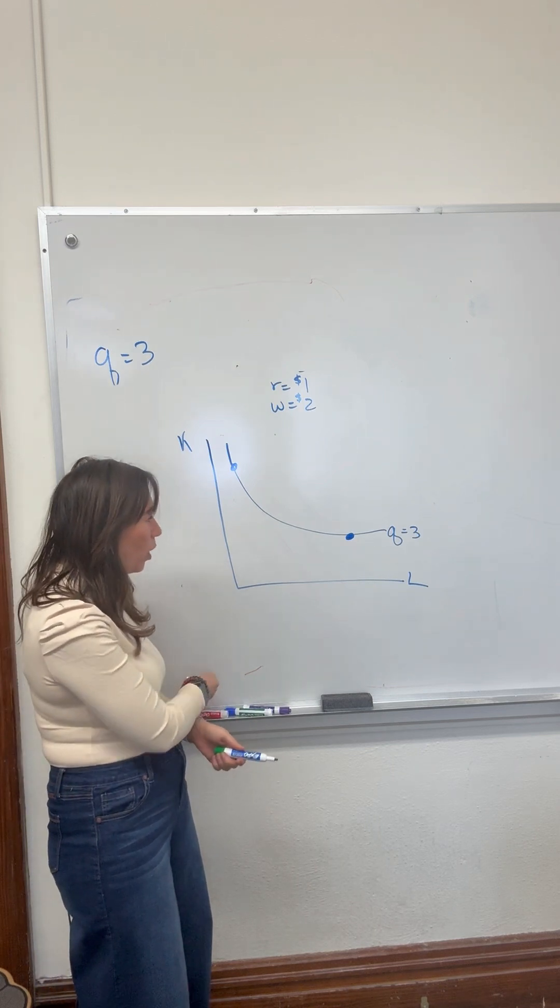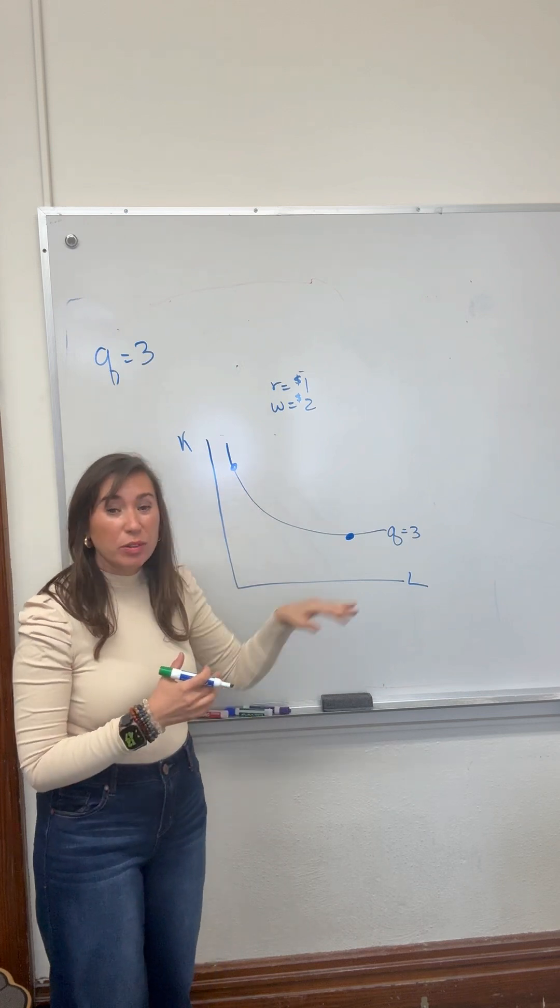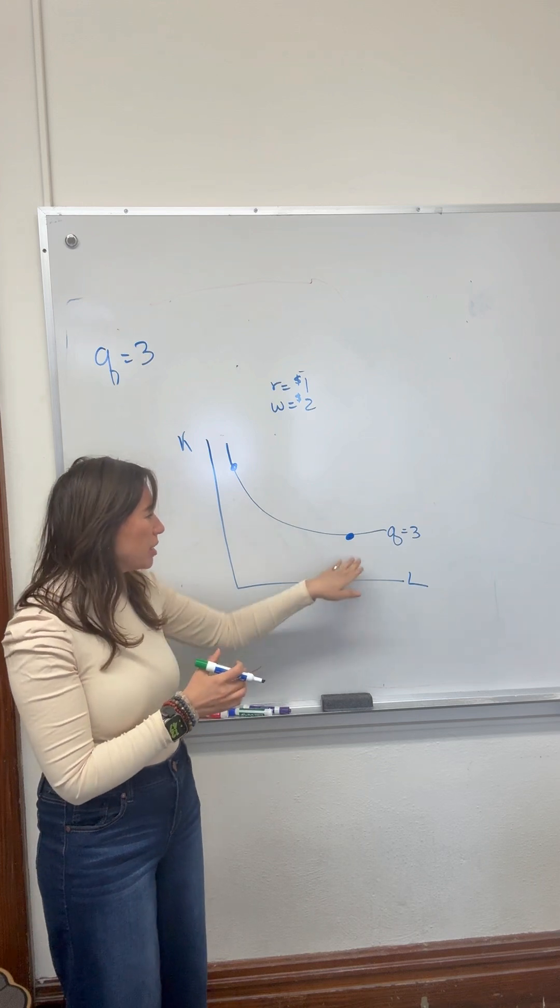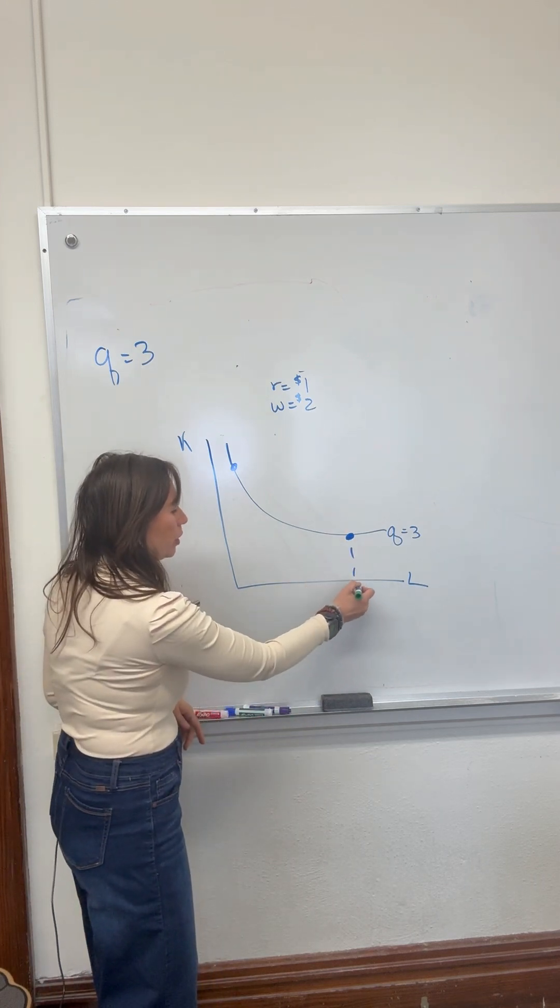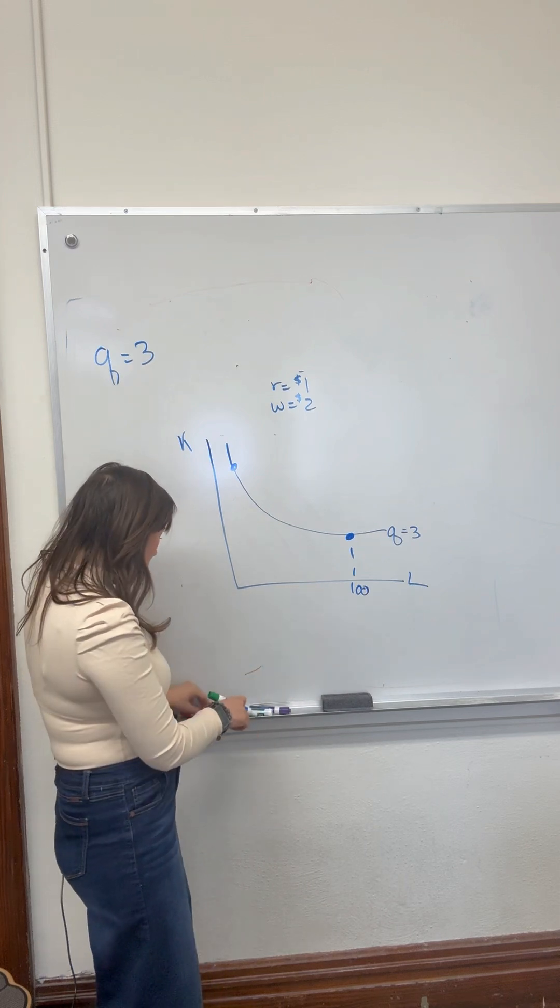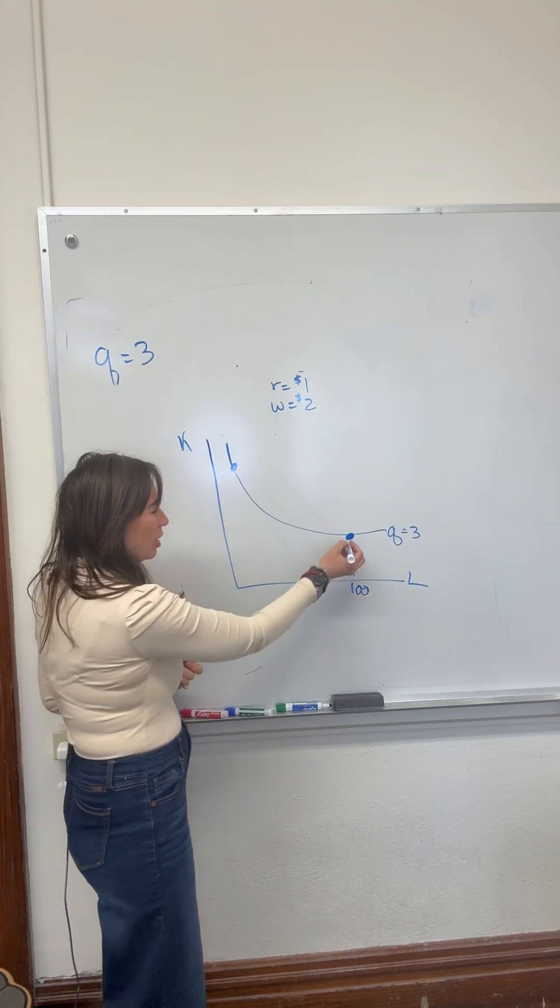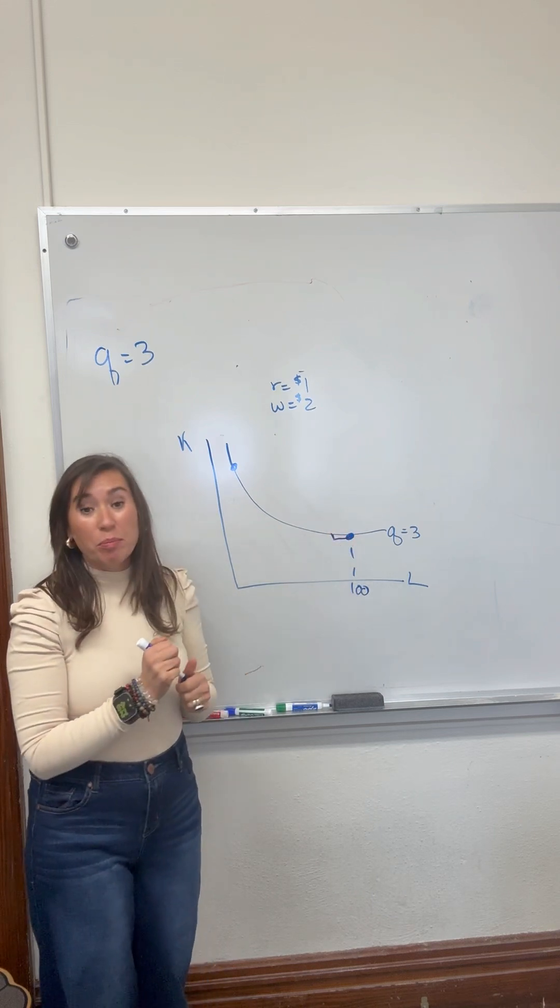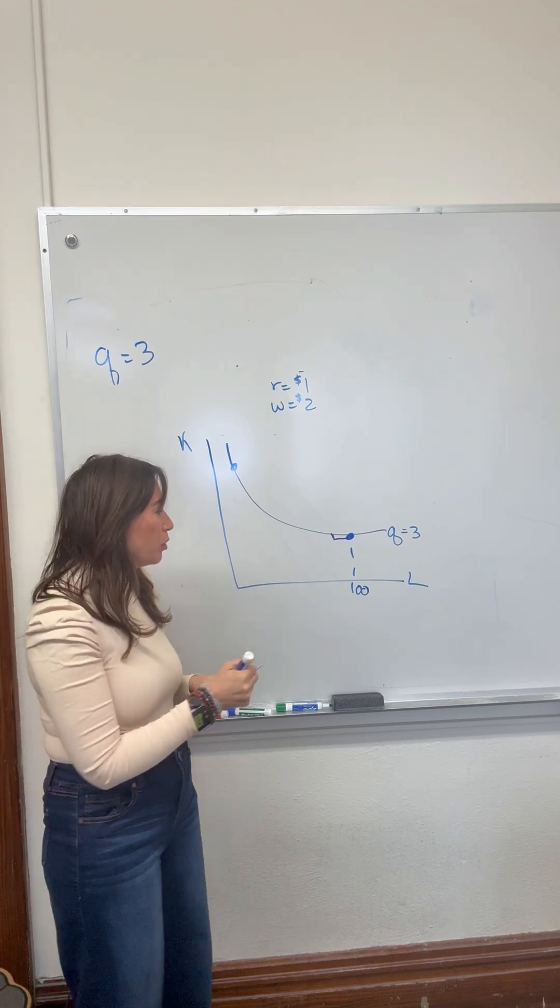The slope of the isoquant is how the labor we use changes as we move along the isoquant curve. When we're using a whole bunch of labor, let's say 100 laborers, if we want to replace one laborer, how much capital will we have to increase by in order to maintain our current production levels?